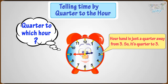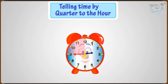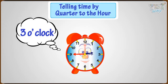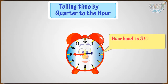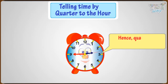But quarter to which hour? The hour hand is just a quarter away from three, so it's quarter to three. It's called that because if the minute hand moves round one more quarter, it will be three o'clock. Also, here the hour hand is pointing three-fourths of the way past the current hour — see the dotted line. Hence, quarter to three, or two forty-five.